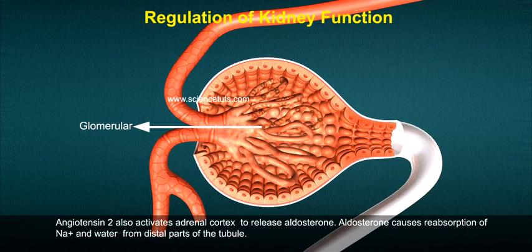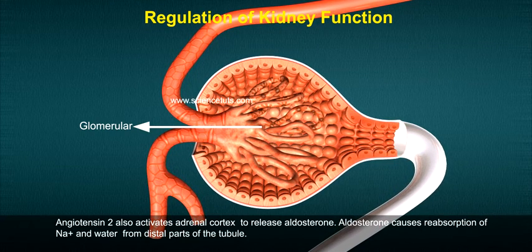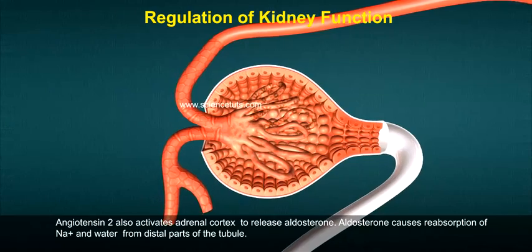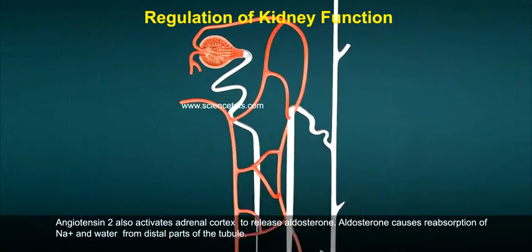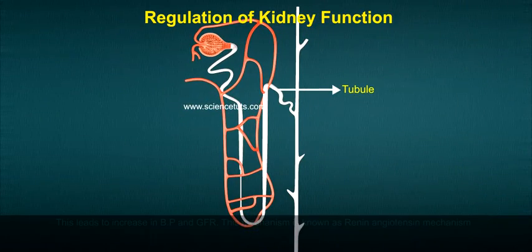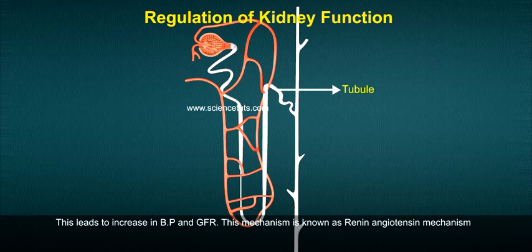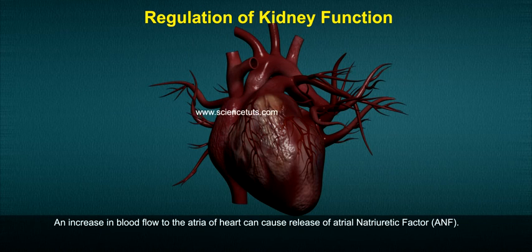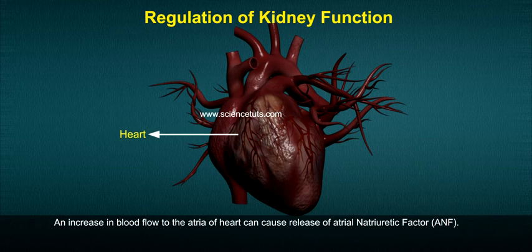Angiotensin 2 also activates the adrenal cortex to release aldosterone. Aldosterone causes reabsorption of Na+ and water from the distal parts of the tubule. This leads to an increase in blood pressure and GFR. This mechanism is known as the renin-angiotensin mechanism.